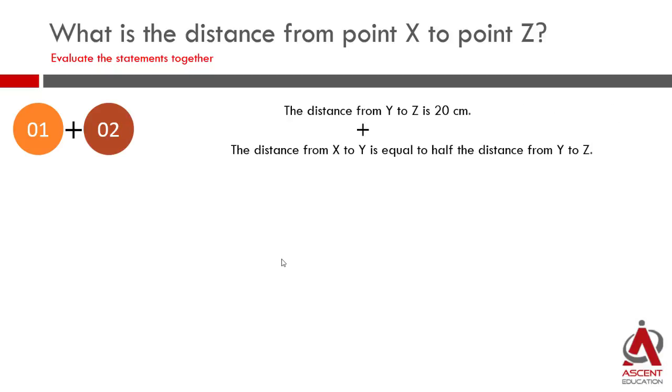From statement 1 we know the distance from Y to Z is 20 cm. And from statement 2 we know that the distance from X to Y is equal to half the distance from Y to Z. We will go to our diagram. It is right angled at X. So this is a right angled triangle. Statement 1: Y to Z is going to be equal to 20 cm. Statement 2: XY is going to be equal to 10, which means this is going to be equal to 10.